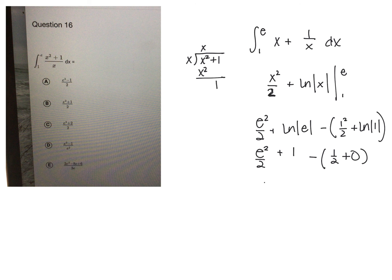And so we get e squared over 2 plus 1 minus 1 half, which would be e squared over 2 plus 1 half. Since those have common denominators, we're just going to rewrite this as e squared plus 1, all over 2.